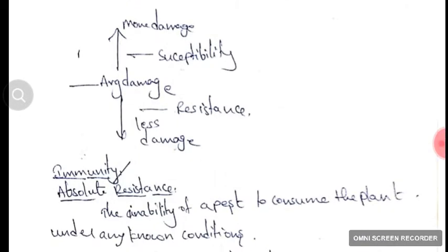Before knowing the concept of HPR, let us know what is immunity or absolute resistance. The inability of a pest to consume the plant under any known conditions can be termed as immunity.